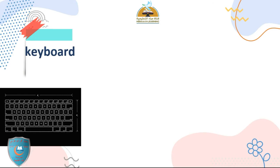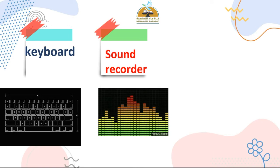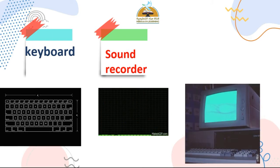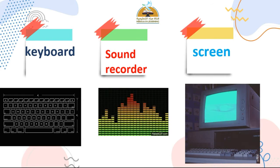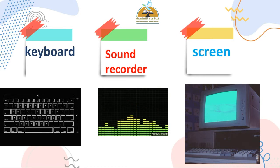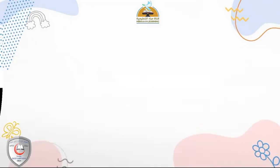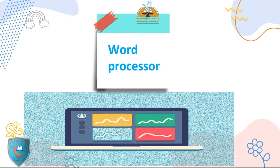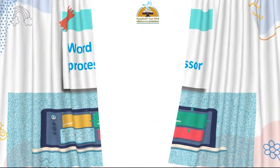عندي keyboard — لوحة المفاتيح. عندي sound recorder — جهاز التسجيل. وعندي screen — شاشة. يبقى keyboard لوحة المفاتيح، sound recorder جهاز التسجيل، screen شاشة. After that، عندي word processor — برنامج المعالجة. تمام، كده كلمات بتاعتي.